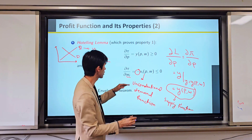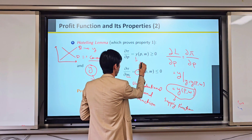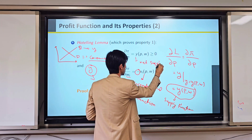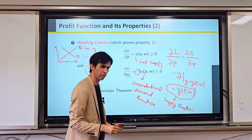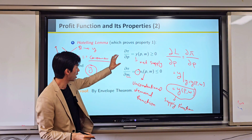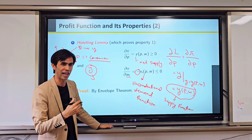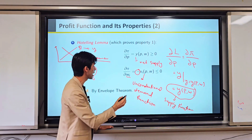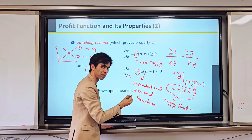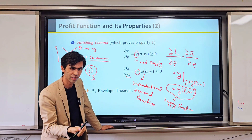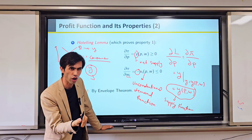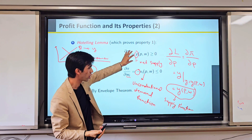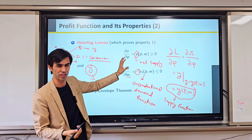This is usually called net supply. We are not talking about supply as unconditional or conditional — because supply itself is Y. Supply is Y, so we do not apply the conditional or unconditional distinction to supply.